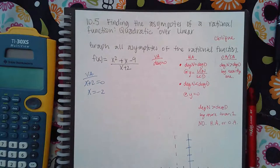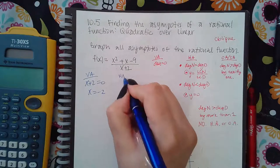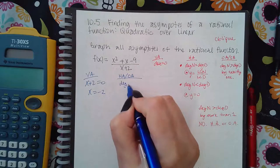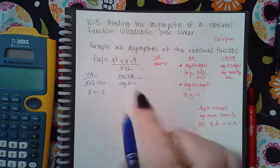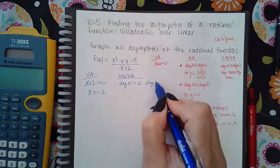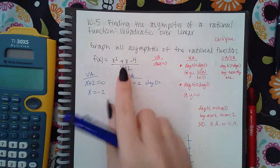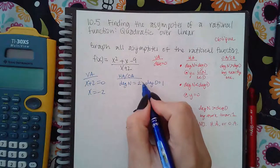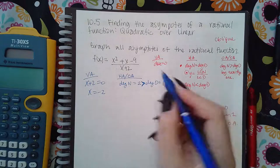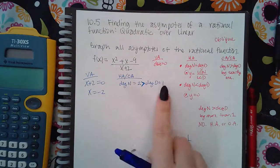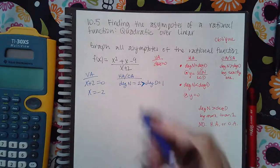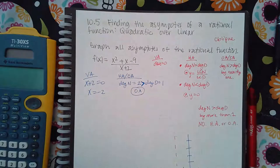For the horizontal or oblique asymptote, I'm going to take the degree of the numerator, which is two, and the degree of the denominator, which has an invisible power of one. The degree is bigger by exactly one — two versus one — so that means I'm going to have an oblique asymptote.